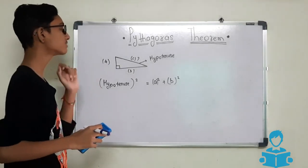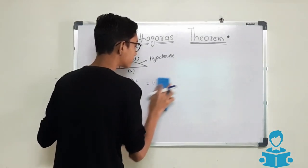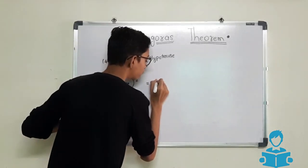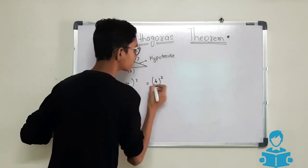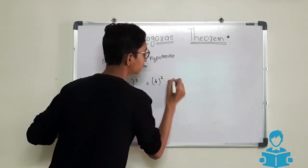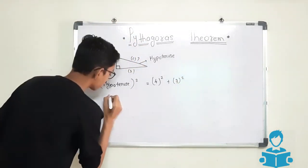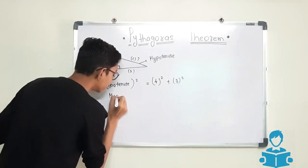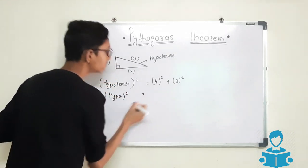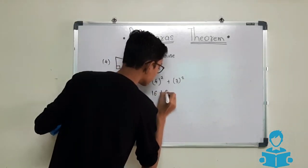The value of A is 4 and the value of B is 3. Here we will simply put up the values. Hypotenuse square is equals to A, that is 4 square, plus B square, that is 3 square. You will get hypotenuse square is equals to 16 plus 9.